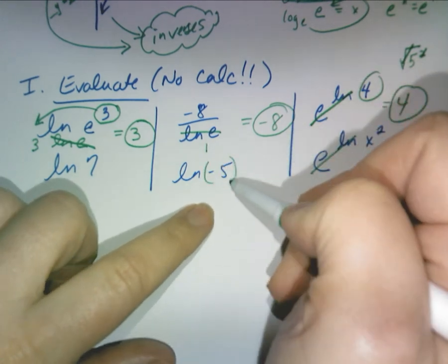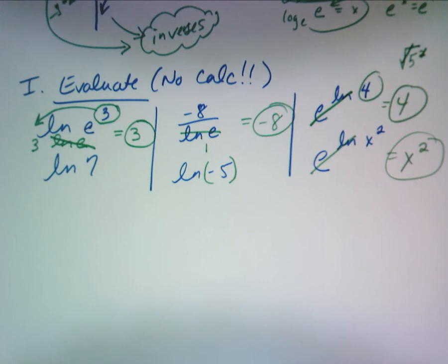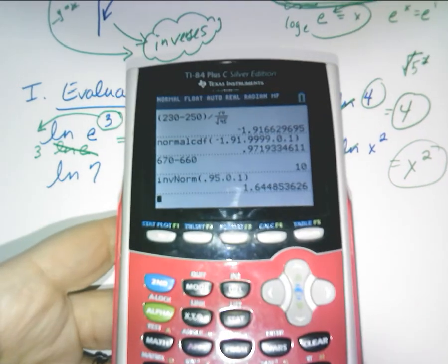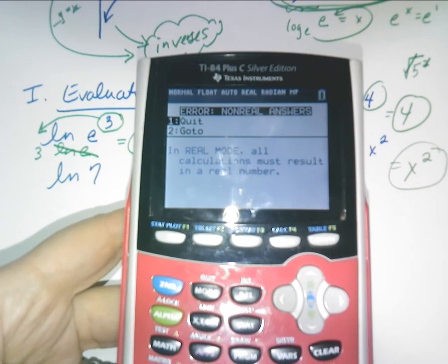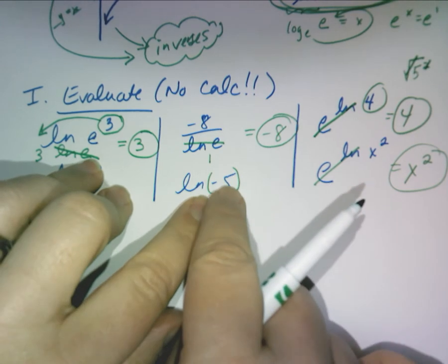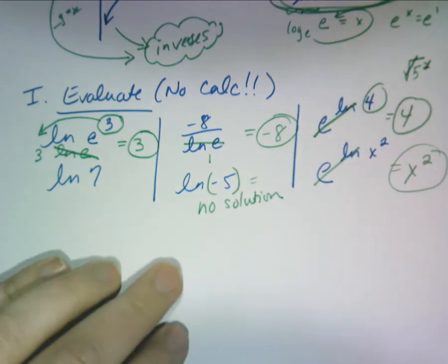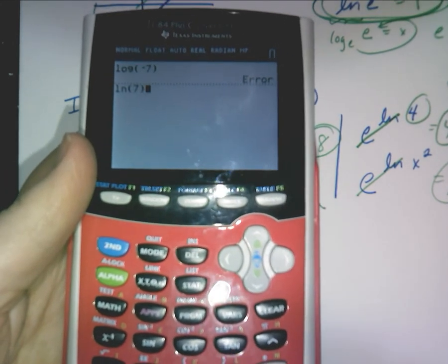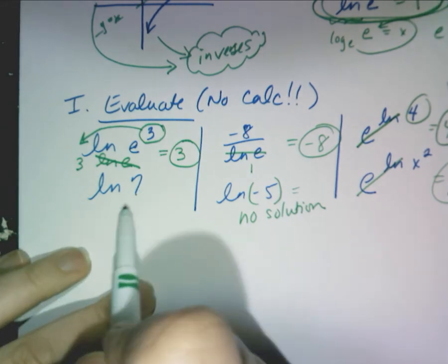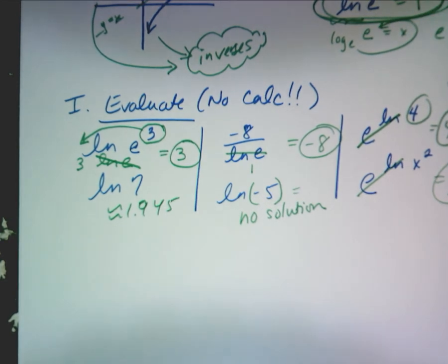What do you know about what comes after ln when we're talking about a negative number? You cannot take the log of a negative number. So anytime you have ln or log of a negative number, that's no solution — it's not real. This is the only one you actually need a calculator for: ln(7) is approximately 1.945, and e to that would be about 7.